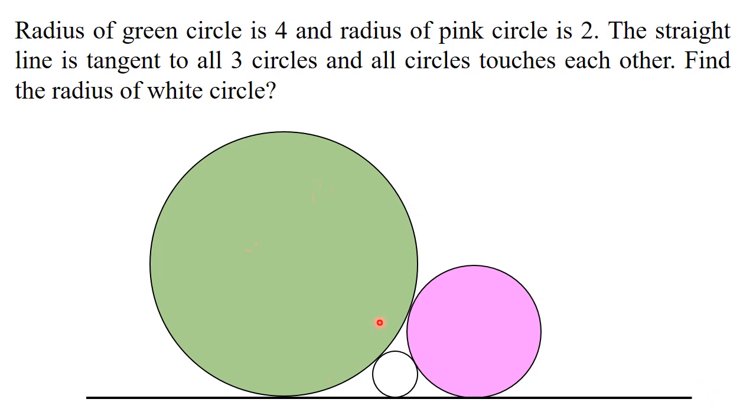Friends, this green circle and this pink circle, find the radius of this small circle. This line is tangent and the circles touch each other. Friends, if you know this solution, let's start to get the solution.